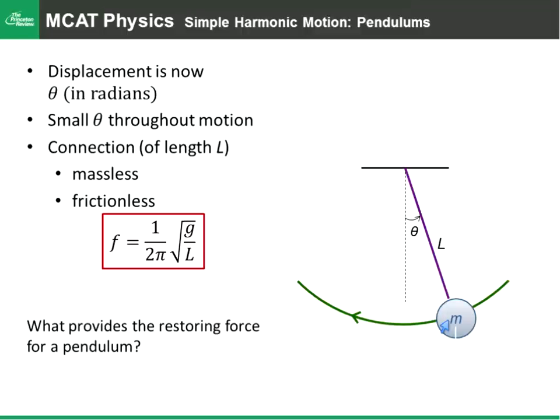Somewhere under this sort of 10 to 15 degree range would be the maximum amplitude you'd want to have a simple harmonic pendulum oscillation, anything larger than that. And it's no longer simple harmonic. It becomes much more complicated to describe.